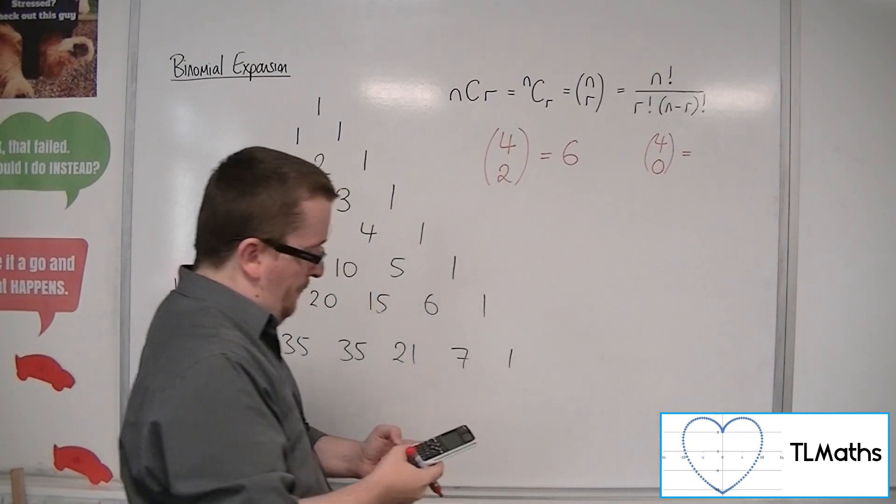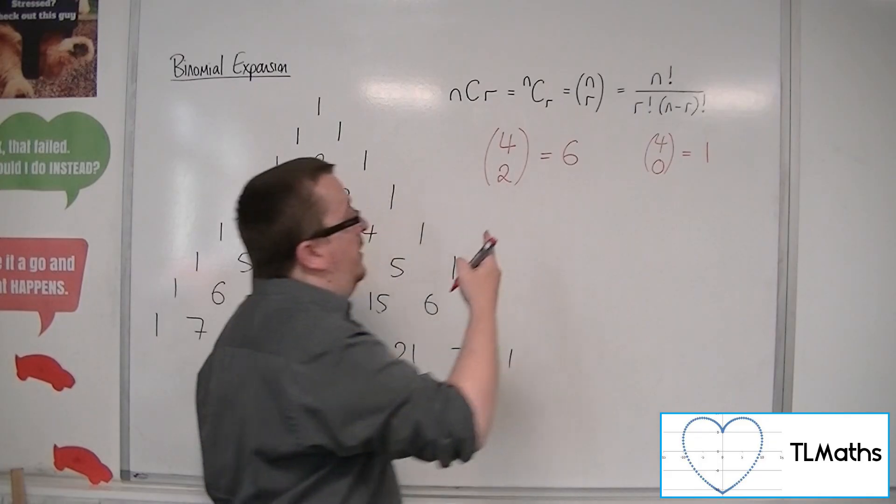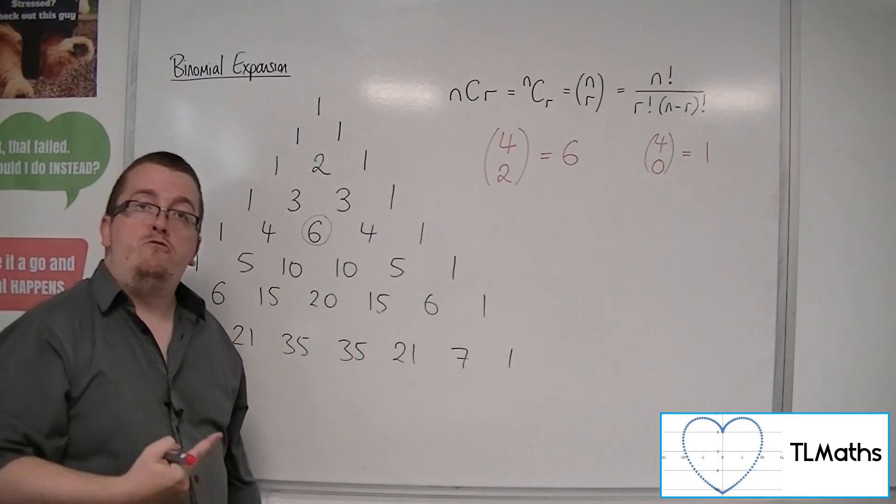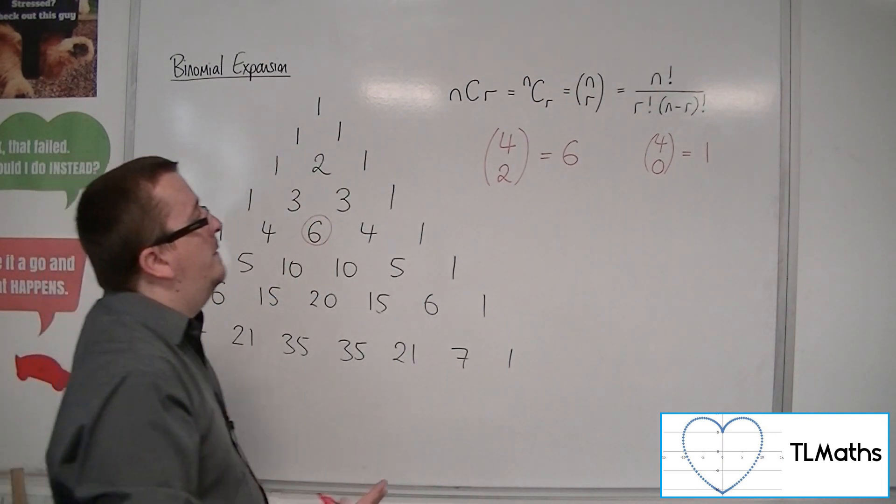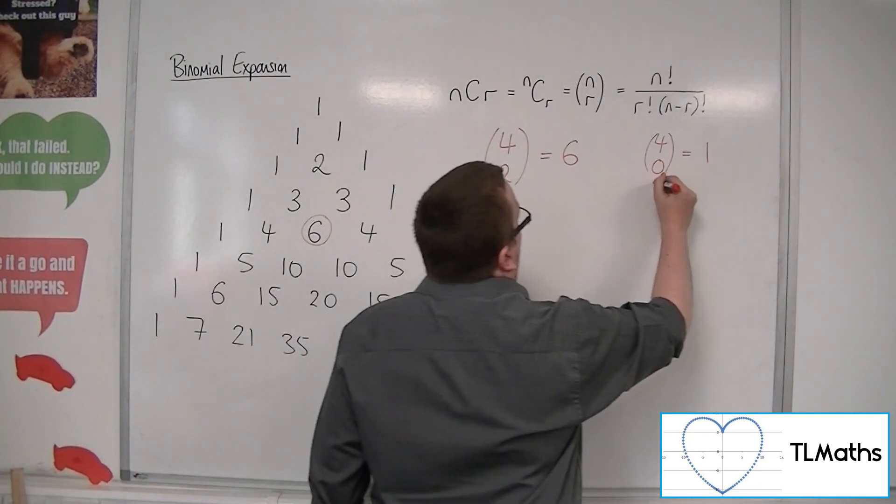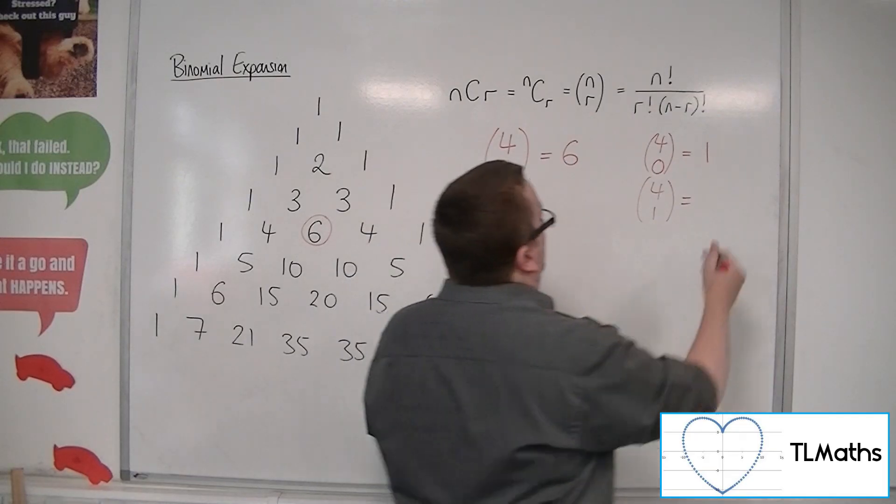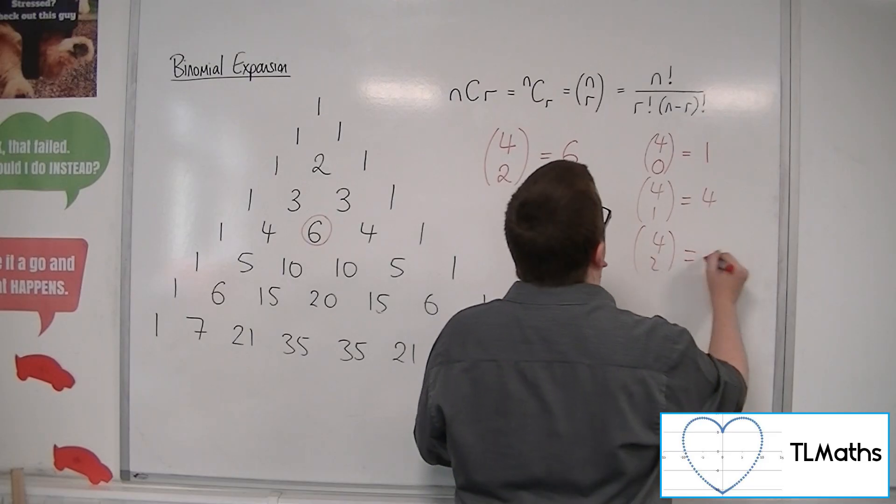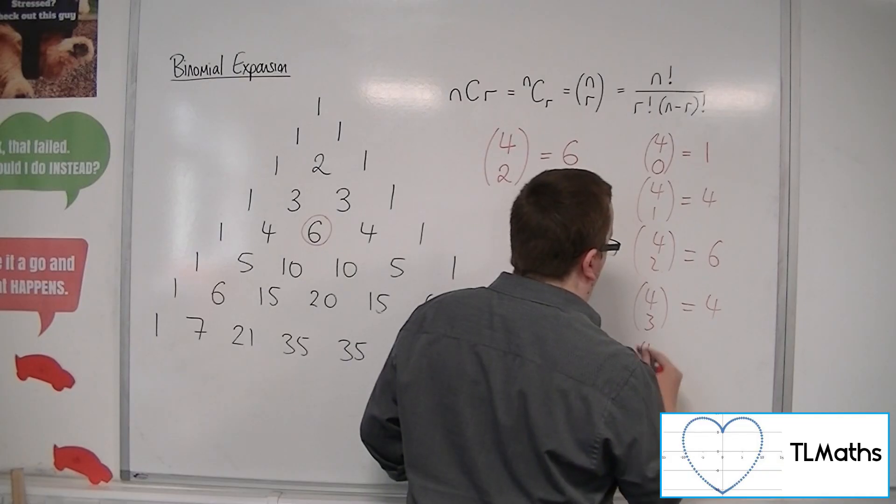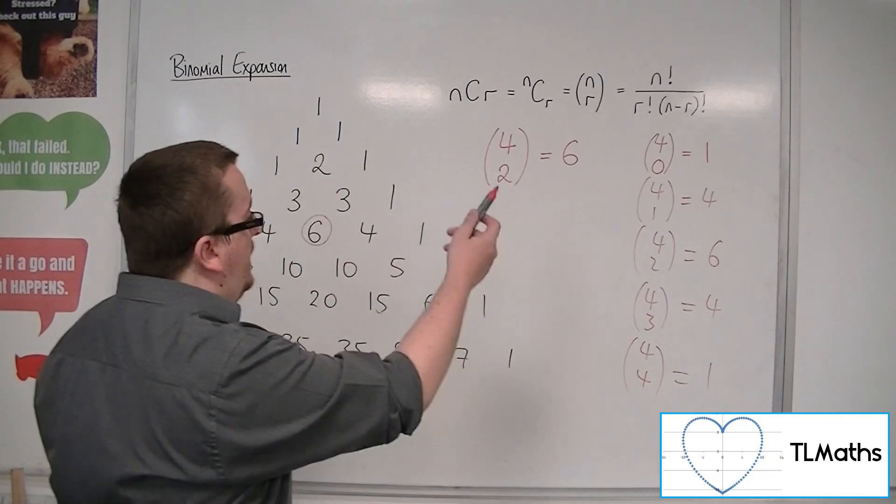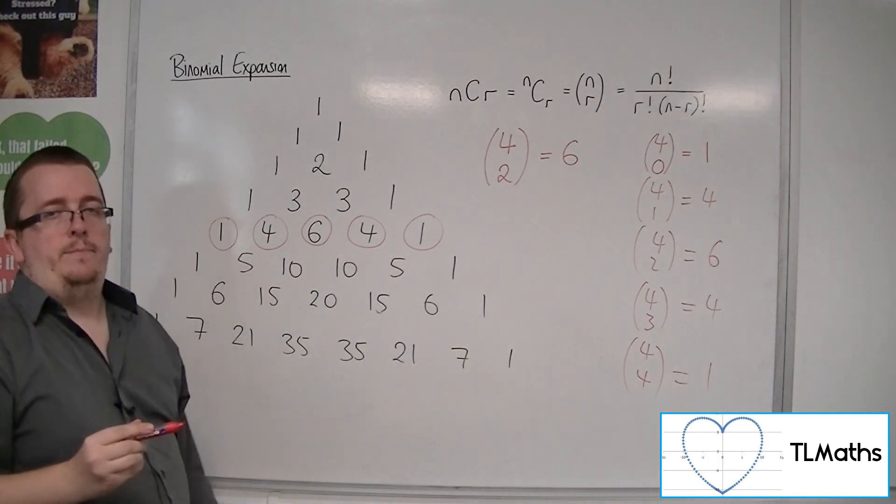4 choose 0: 4 NCR 0 is 1. You have 4 items; the number of ways of choosing 0 of them is 1. It's like the 0 factorial problem again. 4 choose 1 is 4. 4 choose 2 is 6. 4 choose 3 is 4. 4 choose 4 is 1. These numbers relate directly to those numbers in Pascal's triangle.